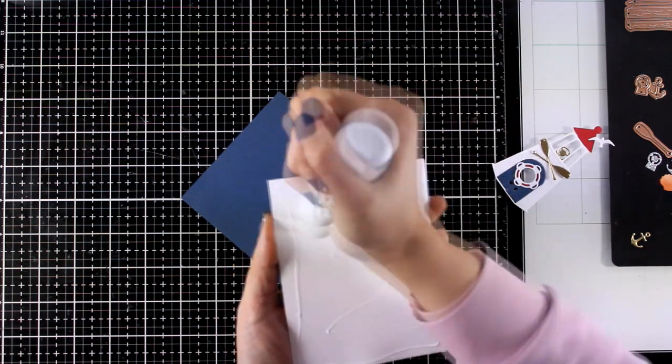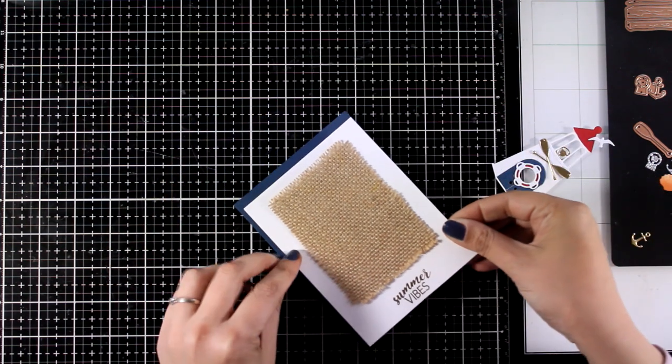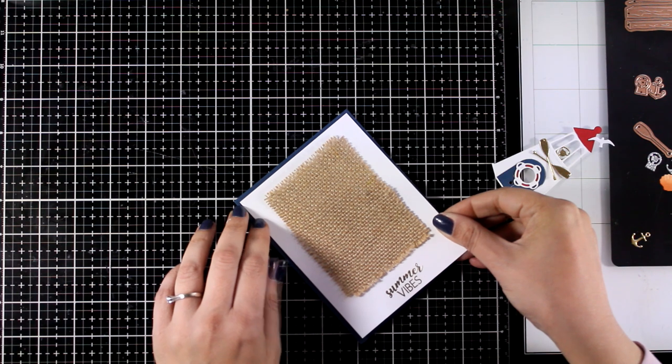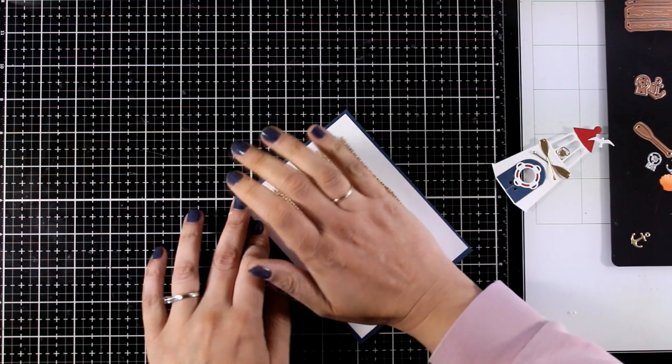So now this panel is trimmed about a quarter of an inch so it should measure 4 by 5 and 1 quarter. And I'm placing it on top of a panel that is 4 and 1 quarter by 5 and 1 half which is navy blue and it is the same cardstock that I used for the doors.